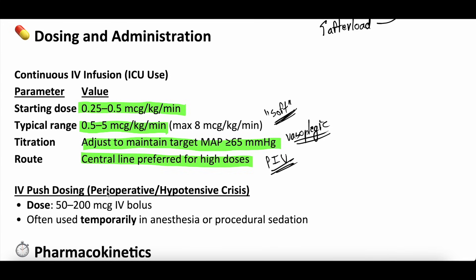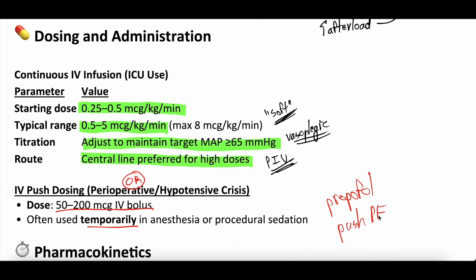In the perioperative setting, anesthesia gives phenylephrine more often than in the ICU. They usually push dose phenylephrine, giving anywhere from 50 to 200 micrograms IV bolus to temporize the patient. For example, if you're doing procedural sedation and give propofol causing the MAP to drop, you can give a push dose of phenylephrine to temporize blood pressure while the propofol wears off. Neosynephrine is the brand name — this push dose form is more often used than the IV continuous infusion version in the ICU.